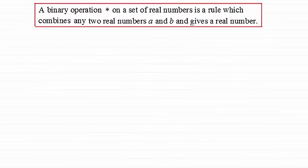Hi there, now in this video I want to talk to you about binary operations. They're often denoted by this symbol here, a star, although you will see on occasions other symbols used. So a binary operation, let's say star, on a set of real numbers is a rule which combines any two real numbers, a and b, and gives a real number.